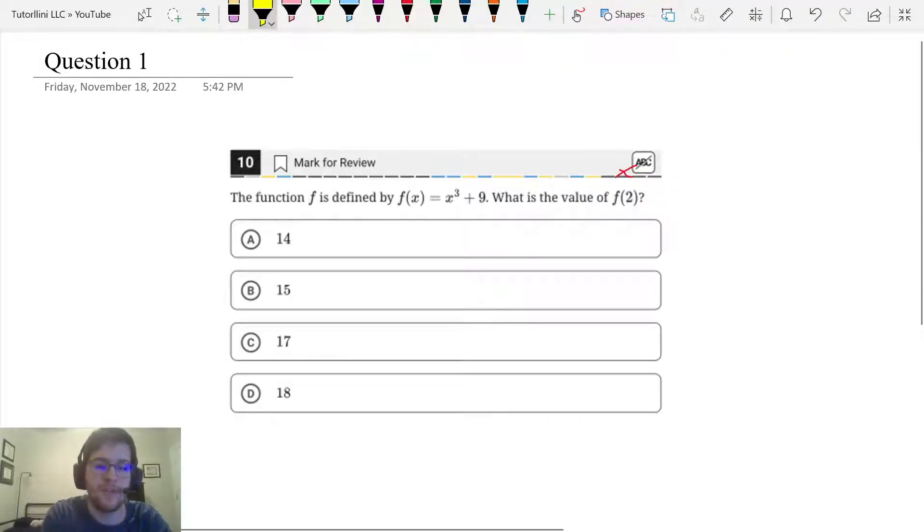First you type in your function and then on a separate line you type in the x value you're trying to evaluate. So we're going to type in f of x equals x cubed plus 9 and then f of 2. So let's do that.